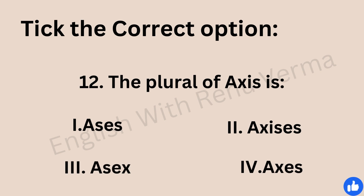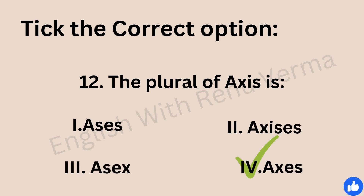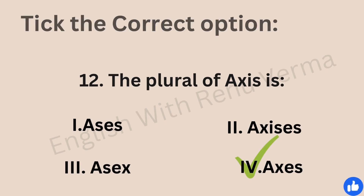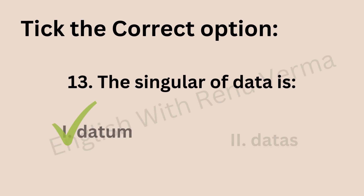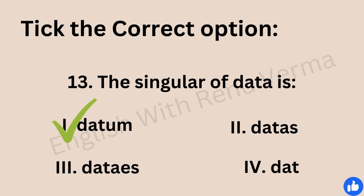The plural of 'excess' — the correct answer is 'excesses'. The plural form of 'excess' is 'excesses'. Next, the singular of 'data' — options are data, datum, datas, datees, or date. The correct answer is 'datum' — data is the plural and datum is the singular.